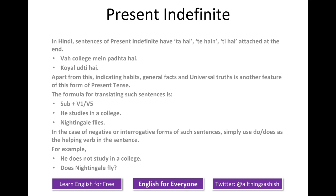By now it is quite clear that we will use V5, or the S or ES form with the verb, in case we are translating a sentence with he, she, it, or a noun in it. Similarly, 'does' will be used only with he, she, it and noun. With I, we, you, they, we will use the first form of the verb and 'do' as the helping verb.